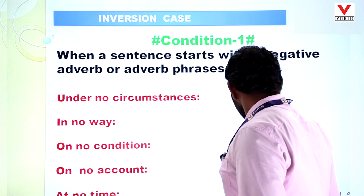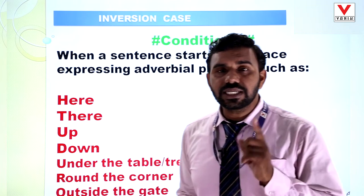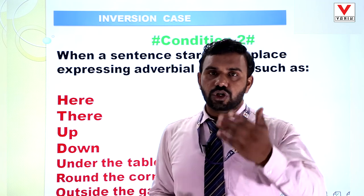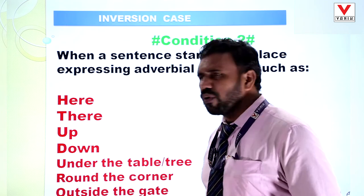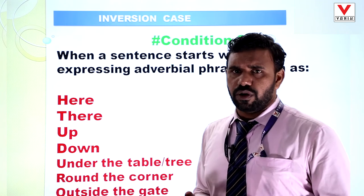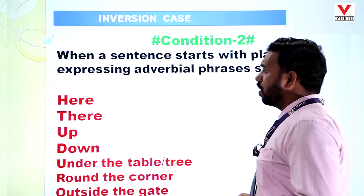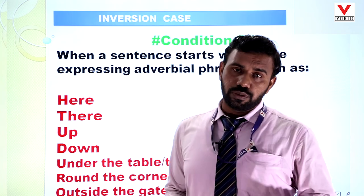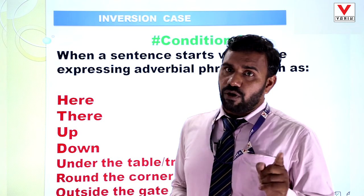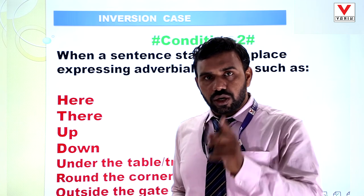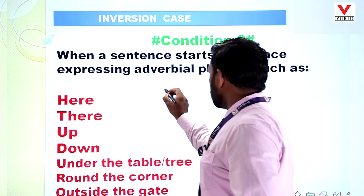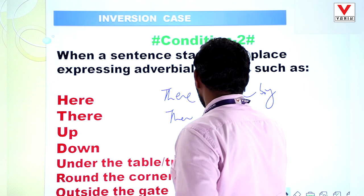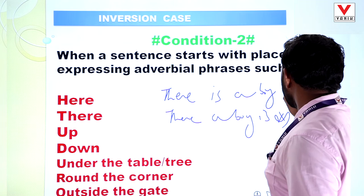The second condition: we have to use inversion whenever a sentence starts with an adverbial place or place adverb like here, there, up, down, in front of the gate, at the top of the hill, round the corner, under the tree, or under the table. You are already acquainted with sentences like 'here comes Raju' or 'there is a boy' — here and there are adverbs, while Raju and boy are subjects. So you always write 'there is a boy,' not 'there a boy is,' which is wrong.